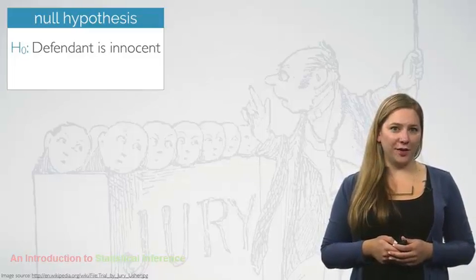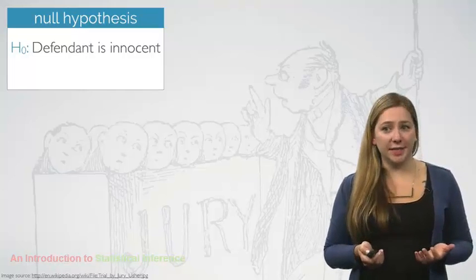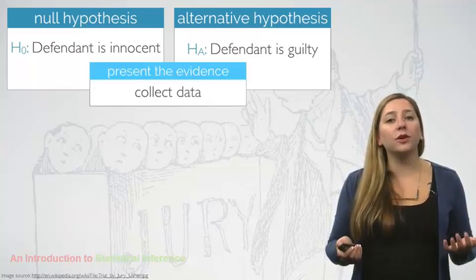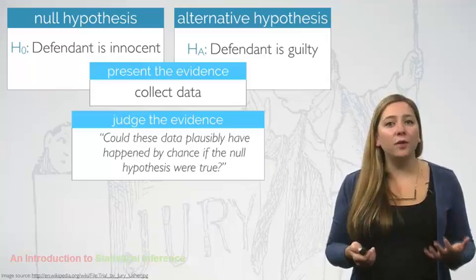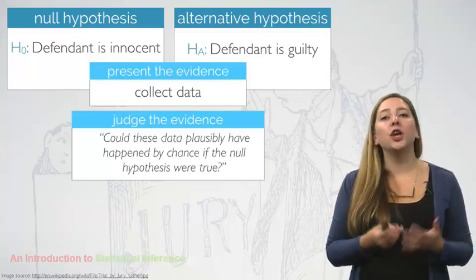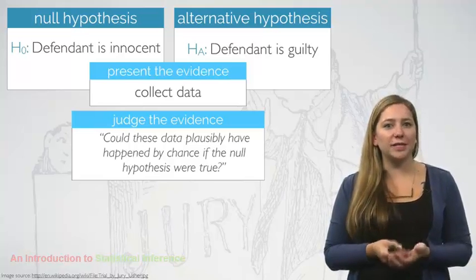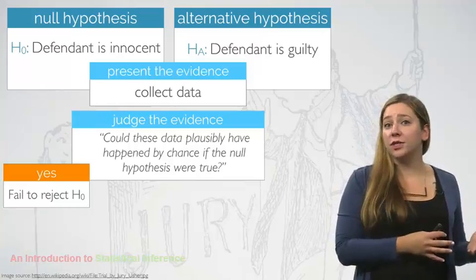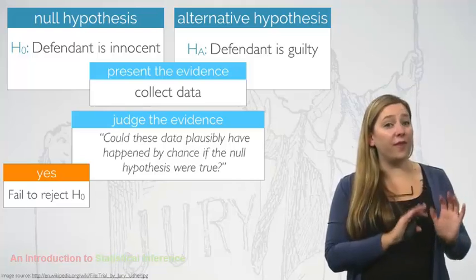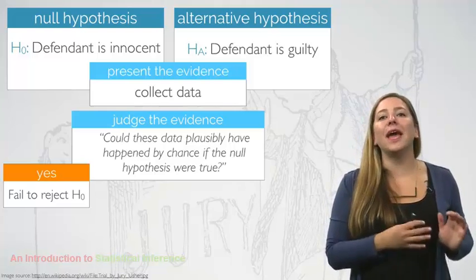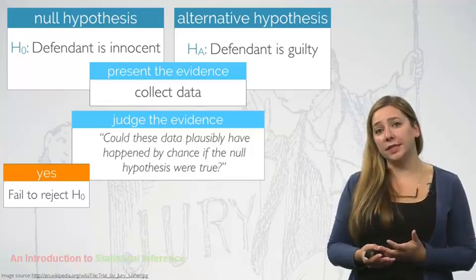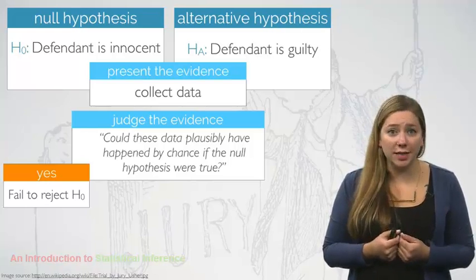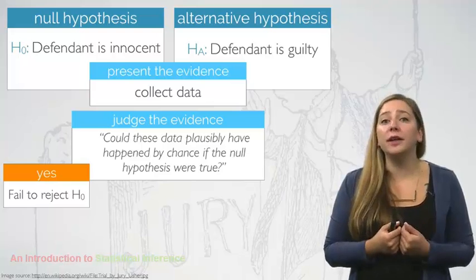Hypothesis testing is very much like a court trial in the US. The null hypothesis says that the defendant is innocent, and the alternative hypothesis says that the defendant is guilty. We then present evidence — in other words, collect data. Then we judge this evidence and ask ourselves: could these data plausibly have happened by chance if the null hypothesis were true? If the data were likely to have occurred under the assumption that the null hypothesis were true, then we would fail to reject the null hypothesis and state that the evidence is not sufficient to suggest that the defendant is guilty. Note that when this happens, the jury returns with a verdict of not guilty — the jury does not say that the defendant is innocent, just that there is not enough evidence to convict.